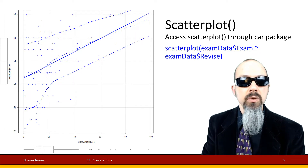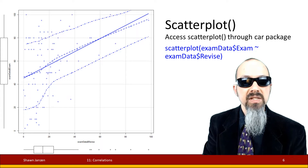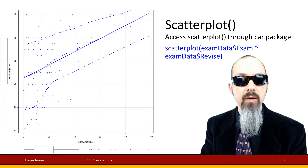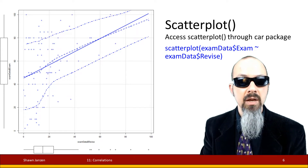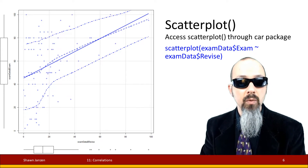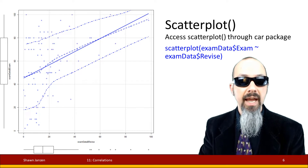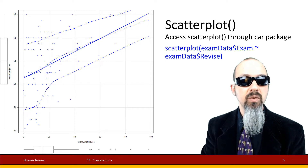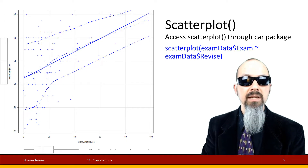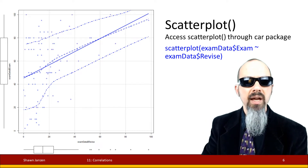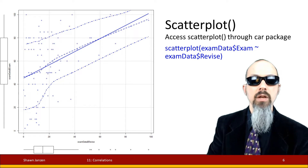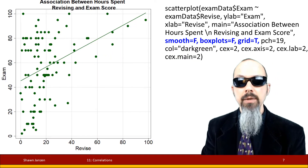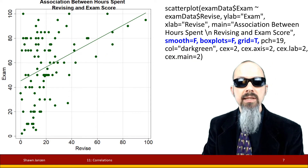It automatically gives us a best-fit line without us having to ask for it, and it also gives us smoothing lines cutting through the middle along with upper and lower bounds. What's also really neat is it gives us box plots on both the x and y axis where we can see the IQR, the whiskers, and dots for additional outliers. It's a great way to get a whole lot of information in one go with just the base options.